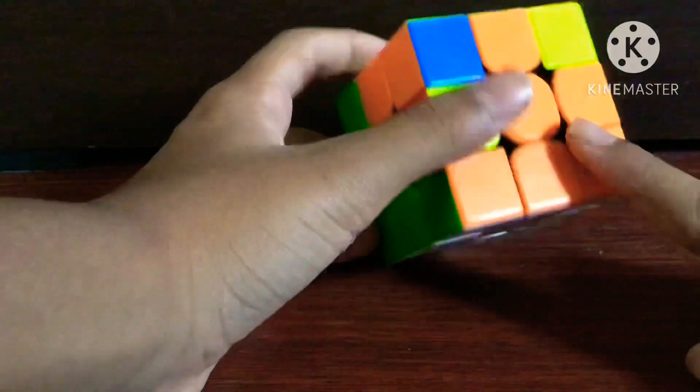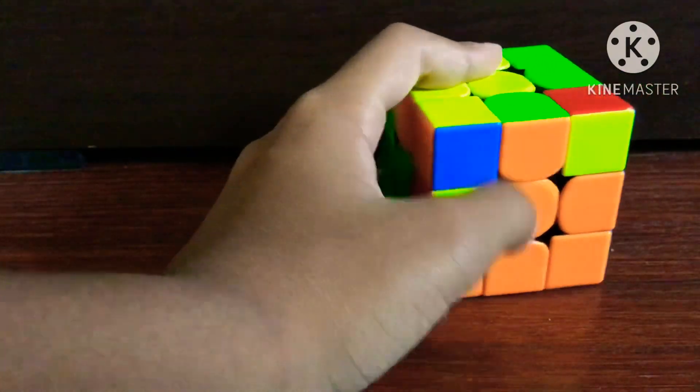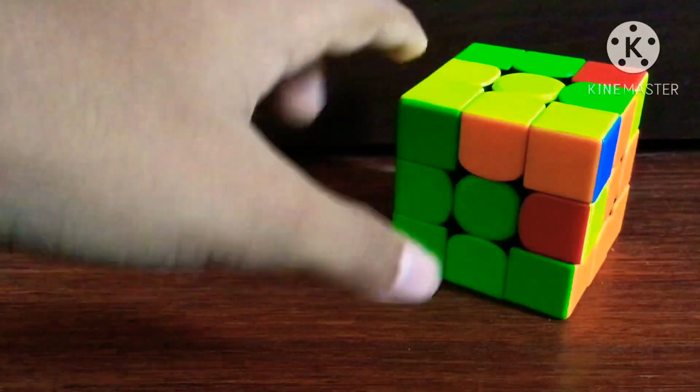What you have to do is when the corner is solved, you just take the edge and match it. You don't have to match it, but just to understand what pattern is there.